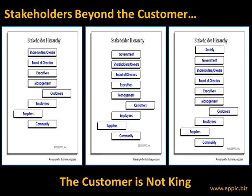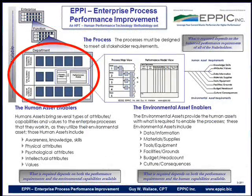You must understand all of the stakeholders and all of their requirements for both the process itself and the products produced. The customer is not king, despite the slogans and posters on the wall. Starting with the process, we can look at a bundle of processes at a department level or a singular process. Theoretically, every process has some process owner — somebody that makes all the hard decisions when push comes to shove.